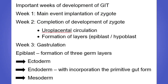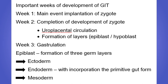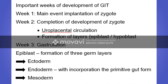Now we will talk about the important weeks of development of the GI tract. In week one, implantation of the zygote occurs. During week two, completion of implantation occurs along with the uteroplacental circulation. One of the most important events in week two is the formation of two layers: the epiblast and hypoblast.